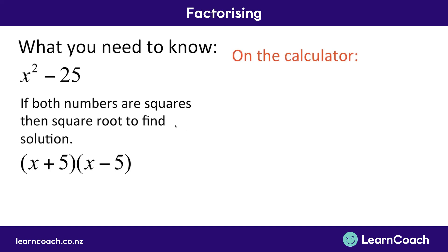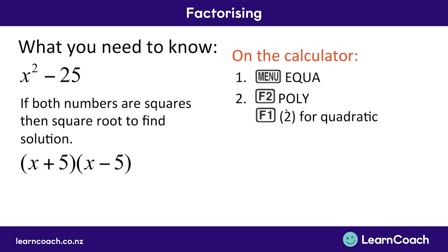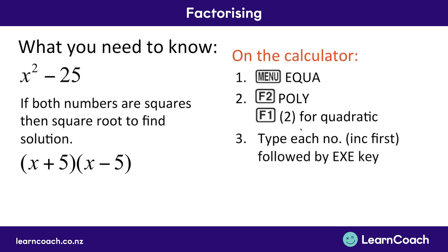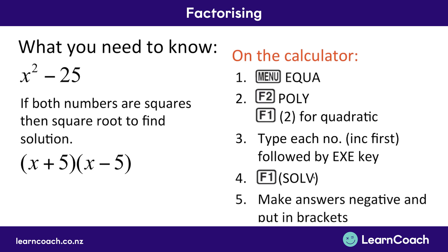The next thing we learned was how to factorize on the calculator. Go to the main menu, press equation, then select polynomial equation, then press 2 for the second degree quadratic. Type in a — the number before x squared — b, which would be 0 for this example, and c — the number by itself, in this case negative 25. After each number, save it by pressing the EXE key — the blue one at the bottom right. Press F1 or execute to solve, then make each answer negative or opposite and put it in brackets with an x.